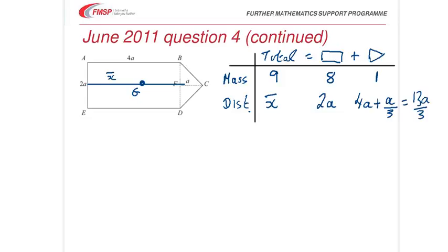So, a third A. Right. Now, all that remains is to take moments about AE. So, the total mass times X bar is equal to the sum of the masses times their distances.